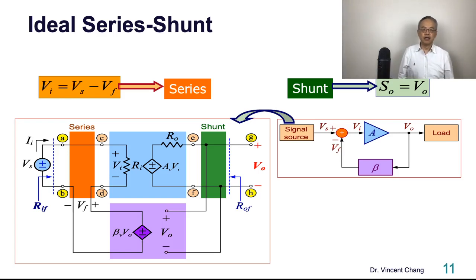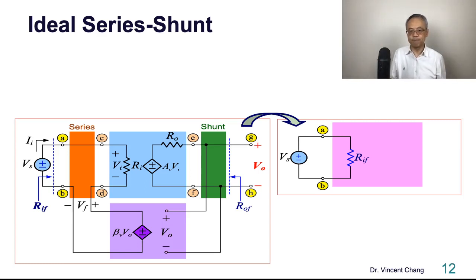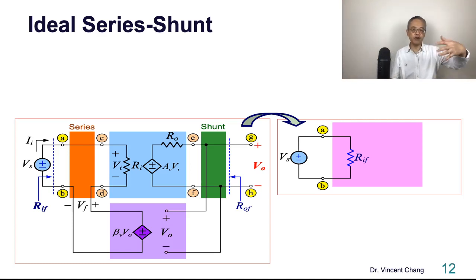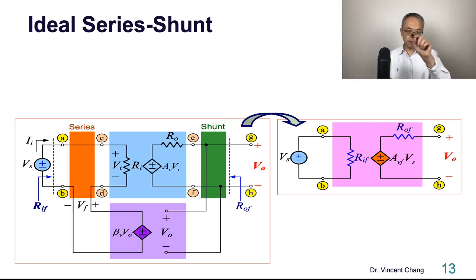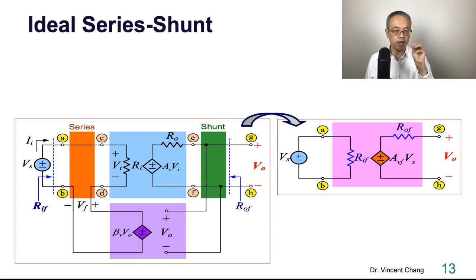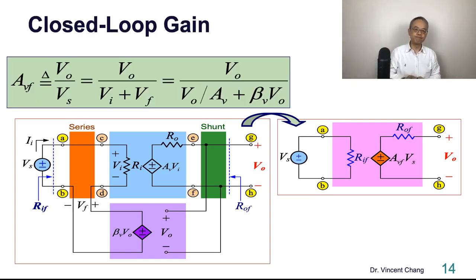Let's consolidate the complicated left-hand side network to a simpler equivalent circuit. The first component, RF, is the closed-loop input resistance — with feedback. The open-loop input resistance is Ri, without feedback. The second component is the voltage-controlled voltage source, where AVF represents the closed-loop voltage gain. The third component, ROF, represents the closed-loop output resistance. These three components represent the whole series-shunt voltage amplifier.